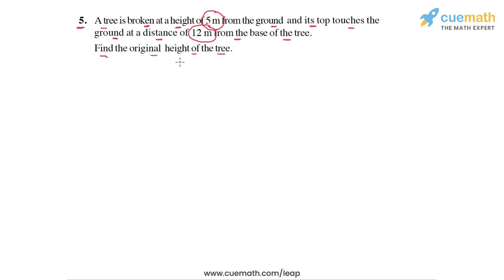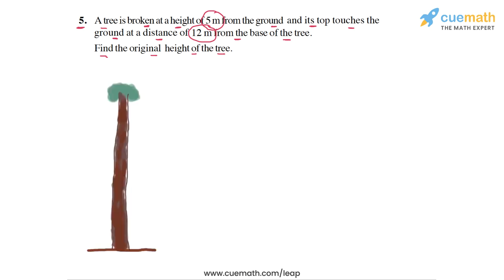I'm going to draw a rough sketch that will help you visualize what this statement really means. Imagine a tree like this — I've drawn this rough sketch of a tree. We don't know the original height of this tree; this is what we have to find. The problem statement tells us that this tree is broken at a height of 5 meters from the ground.